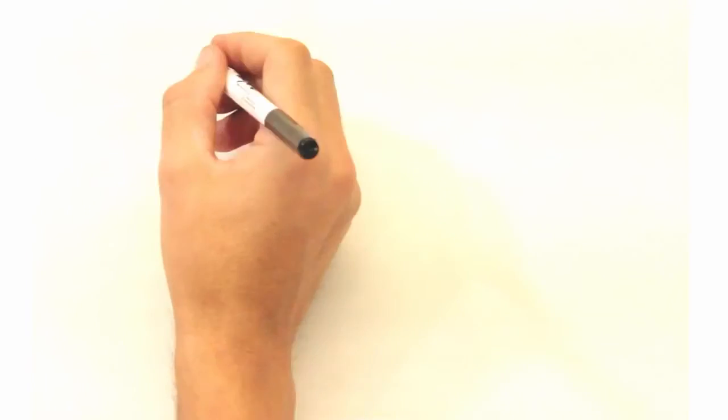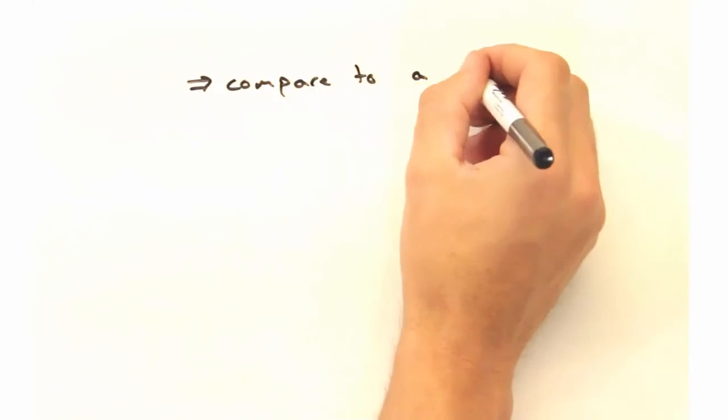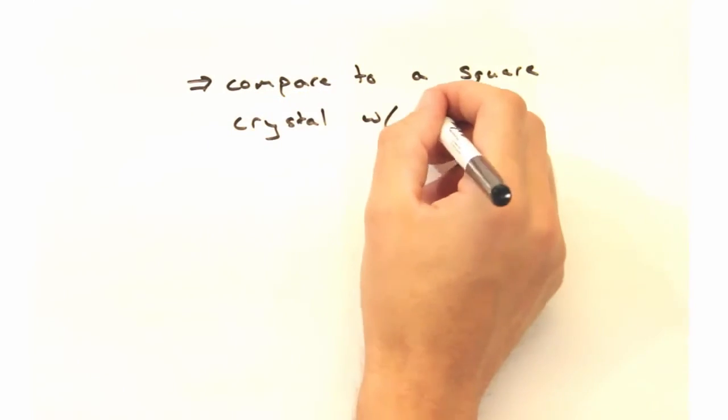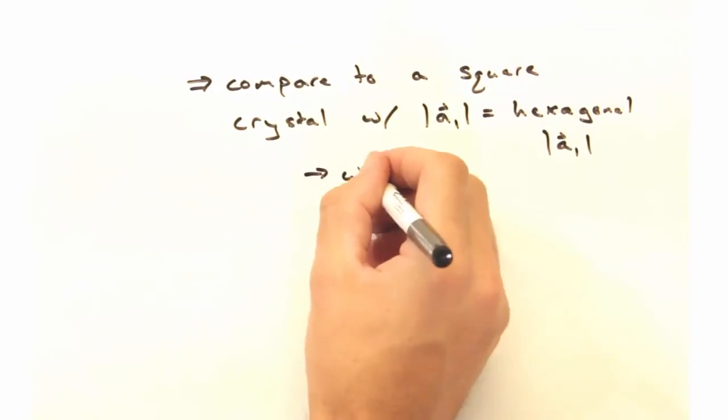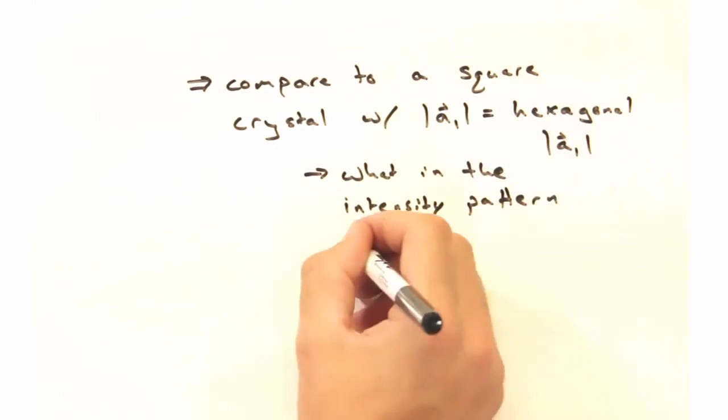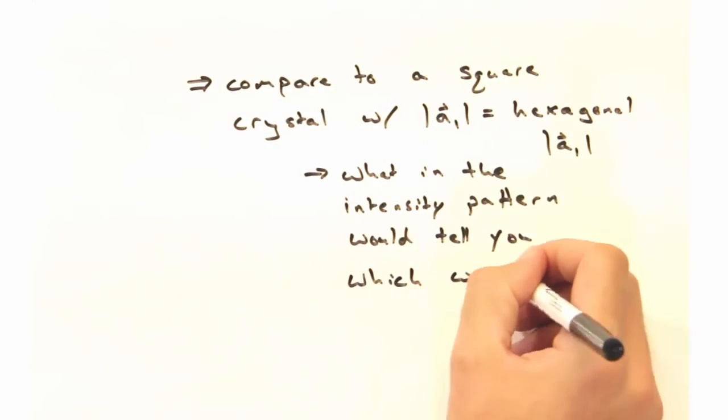Additionally, suppose you had a powder that had a square crystal structure where the lattice constants for both systems, the square and the hexagonal ones, were equal. What in the intensity pattern would tell you which was which?